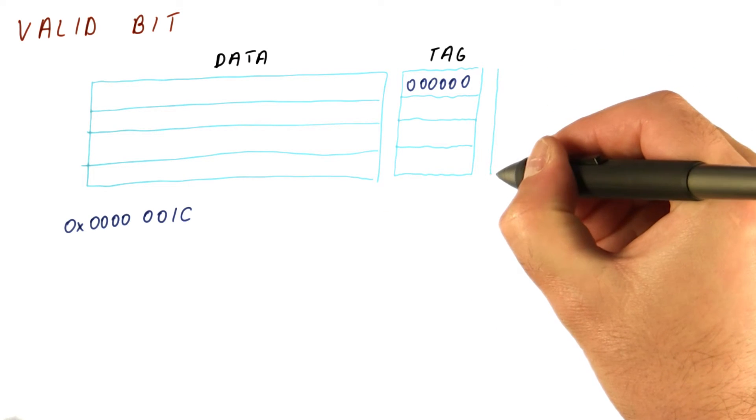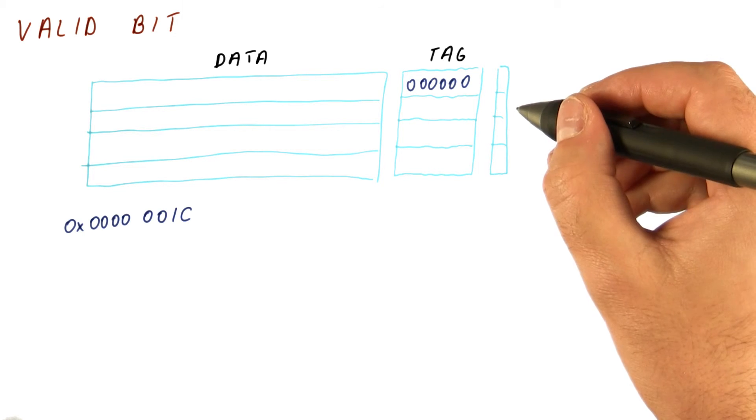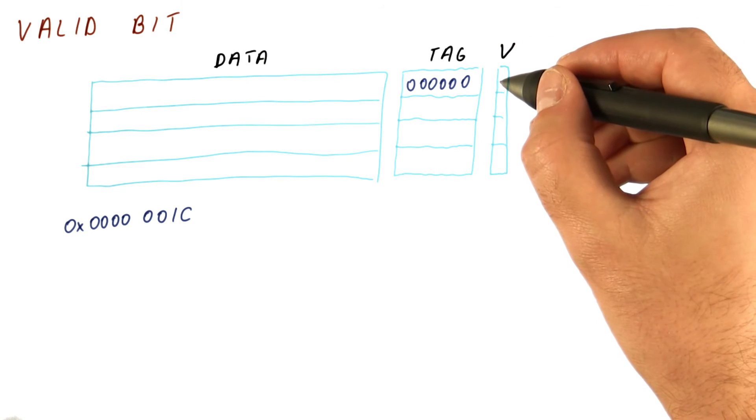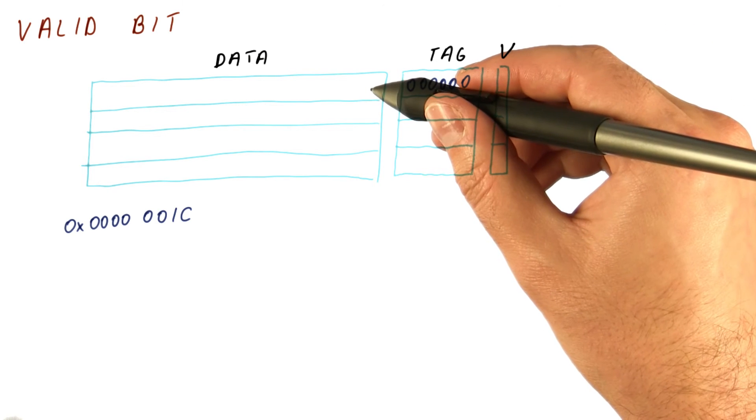So what we do is add an additional bit of state to the cache for each line that tells us whether the tag and the data are valid.